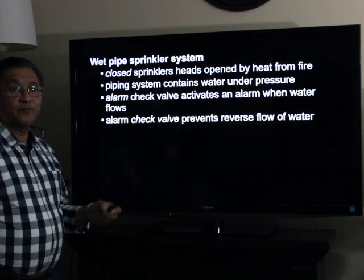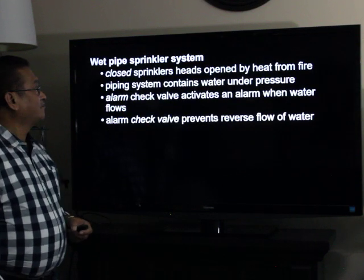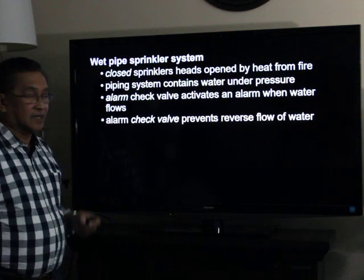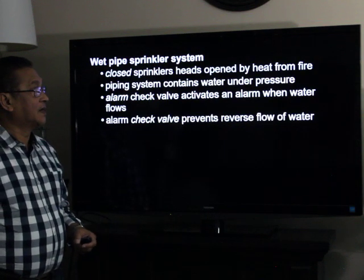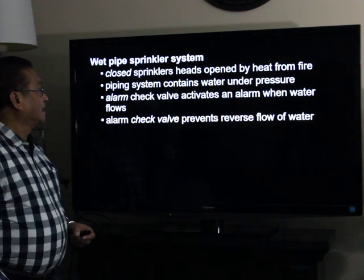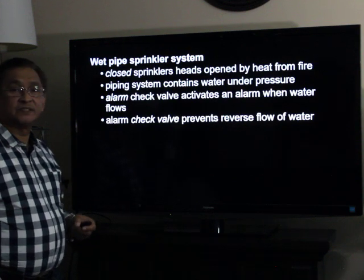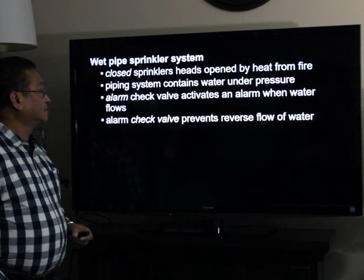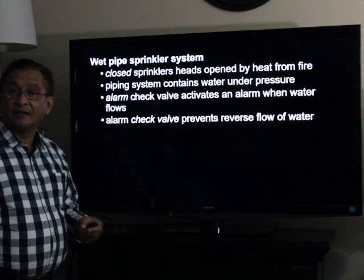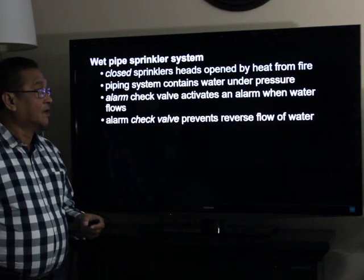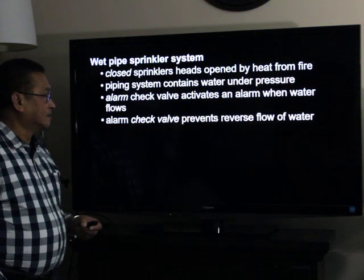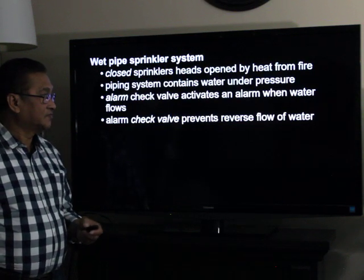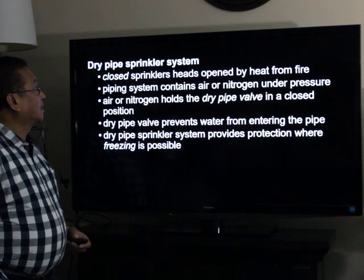For a wet pipe sprinkler system, it is composed of closed heads which are opened by heat from the fire. The piping system contains water under pressure. The alarm check valve activates an alarm when water flows, and the alarm check valve prevents the reverse flow of water.